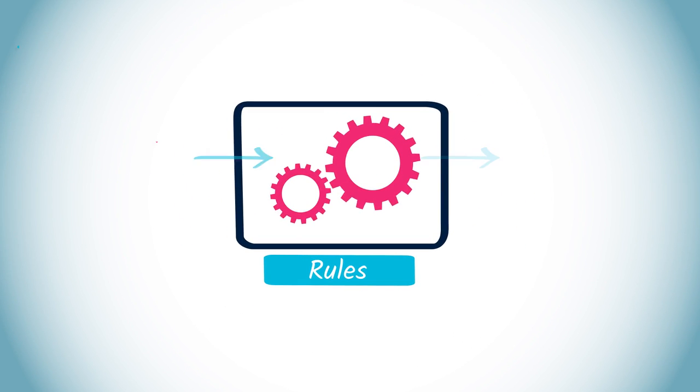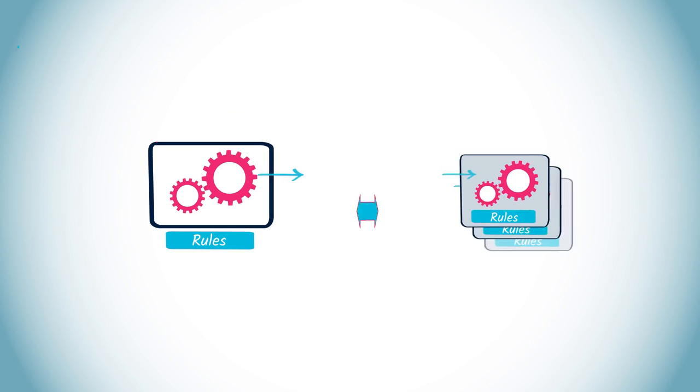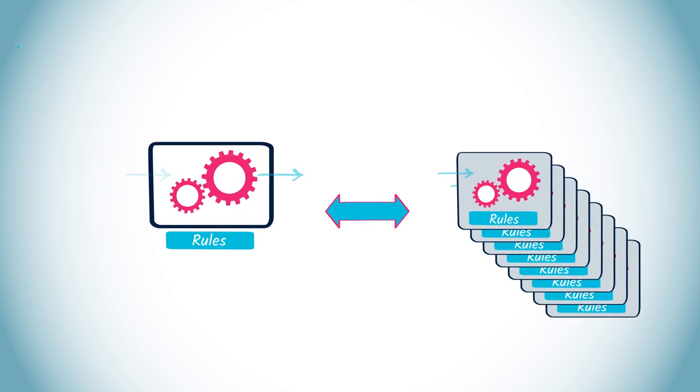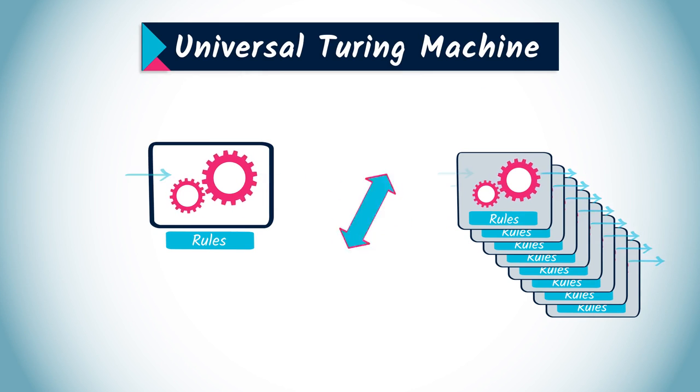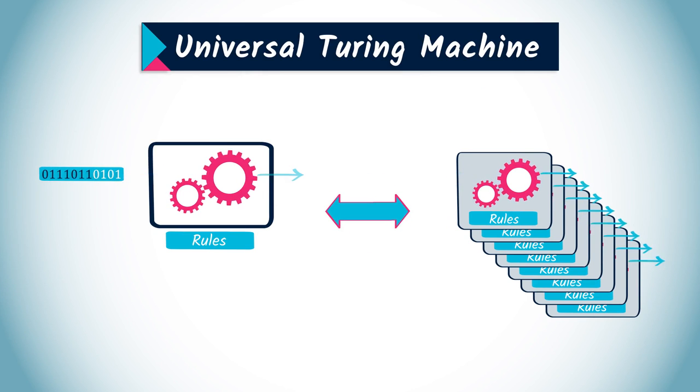The computing power of the Turing machine is even more impressive. Not only it can run any algorithm, but there also exists some Turing machines, called universal Turing machines, which are able to emulate any other Turing machine. Unlike regular Turing machines, a universal Turing machine requires two arguments.